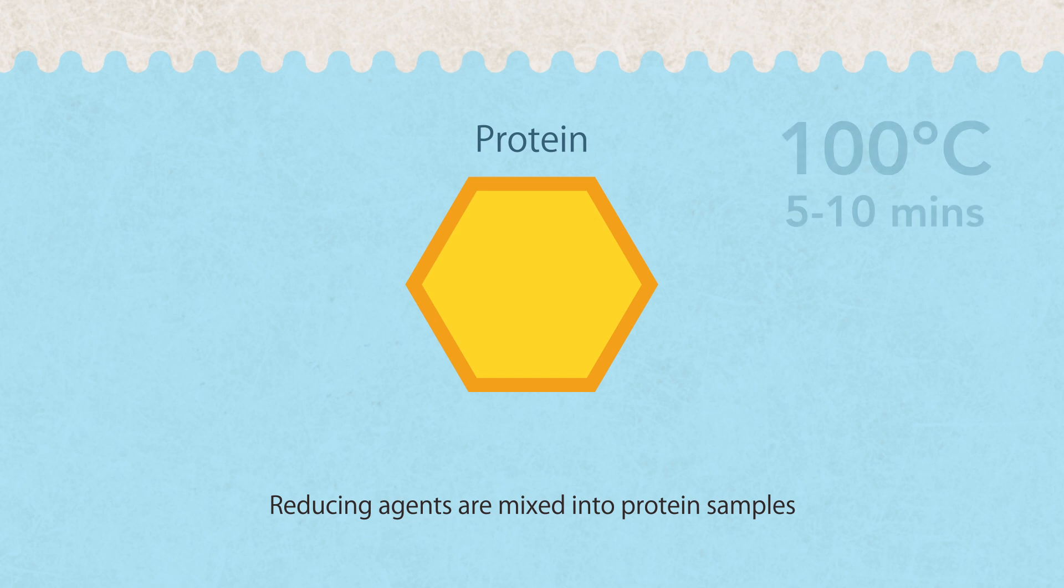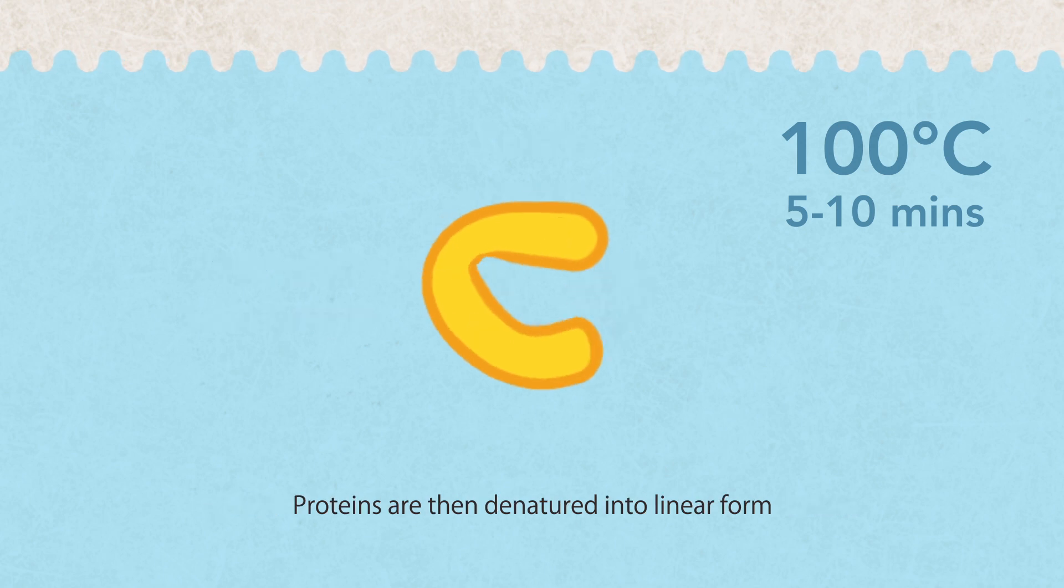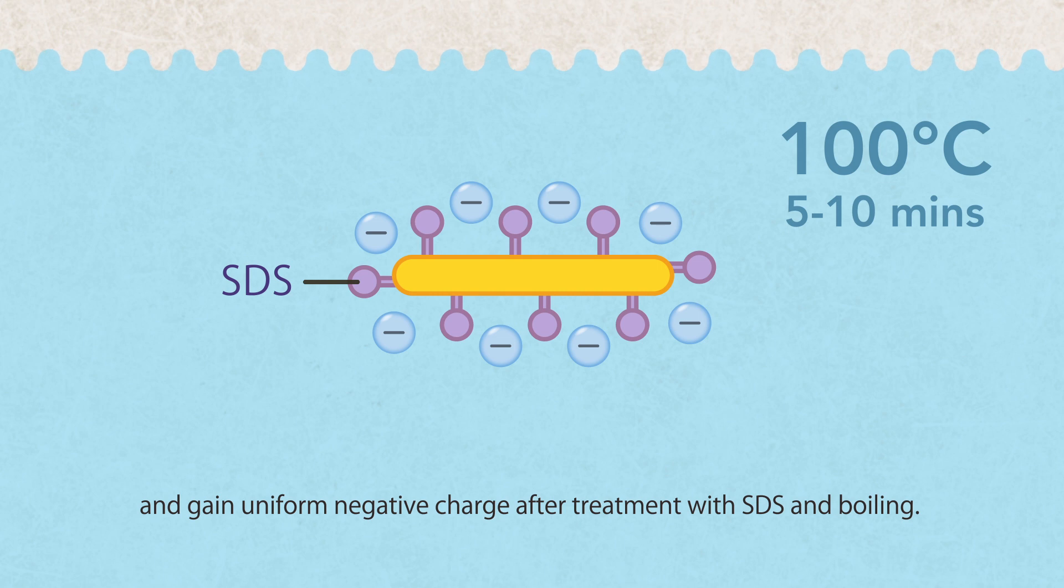Reducing agents are mixed into protein samples to break disulfide bonds between and within the molecules. Proteins are then denatured into linear form and gain uniform negative charge after treatment with SDS and boiling.